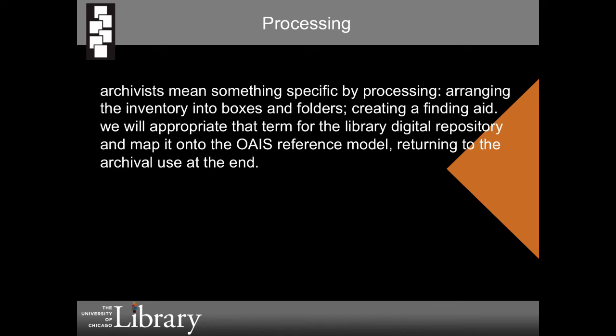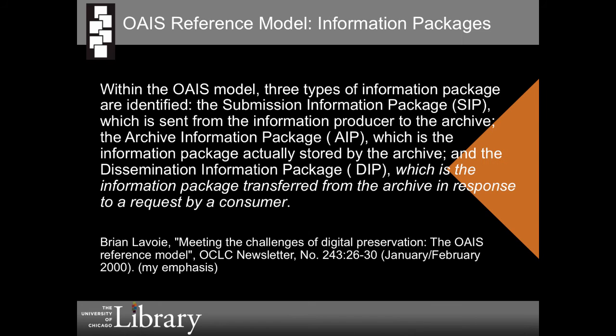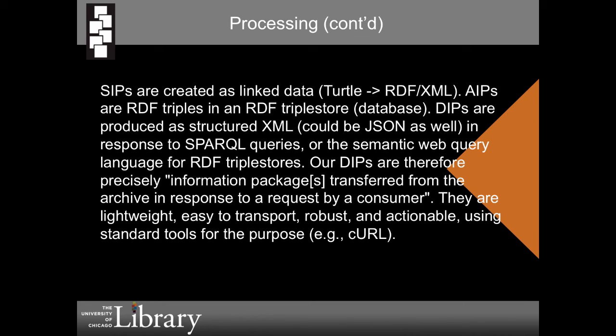An archivist means something very specific by processing — the end result is the production of a finding aid. Before we help automate that step, we'll turn our attention to how to describe these materials in their variety. We'll appropriate the term 'processing' and map it onto the OAIS reference model. The OAIS reference model describes a Submission Information Package (SIP) as well as a Dissemination Information Package (DIP) — the information package transferred from the archive in response to a request by a consumer. We create SIPs as linked data. DIPs are produced in response to a query addressed to an RDF triple store. Our DIPs precisely conform to the definition of an information package as something transferred from the archive in response to a request by a consumer — lightweight, easy to transport using standard tools, and robust.